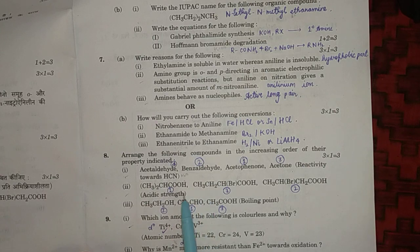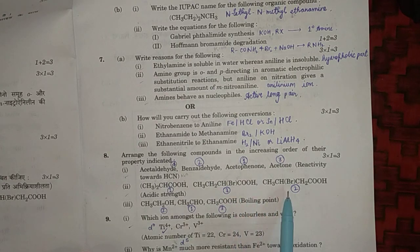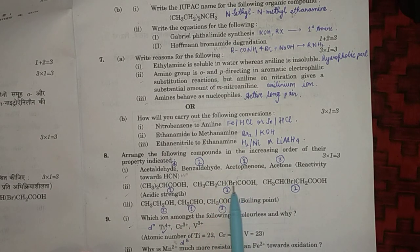Second is acidic strength: it will be least in (CH3)2CHCOOH, then in the third one CH3CHBrCH2COOH, and then CH3CH2CHBrCOOH.